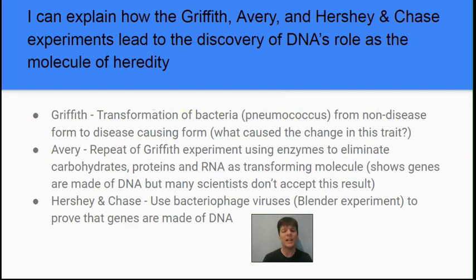This means that genes are made of DNA. The first experiment is the Griffith experiment — this is the transformation of bacteria. It was pneumococcus, the bacteria that causes pneumonia, that Griffith was working with. His experiments showed that non-disease-causing pneumococcus could be transformed into the disease-causing form. The question was: what molecule caused this transformation to take place?